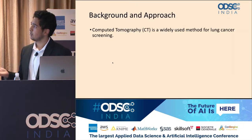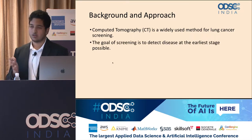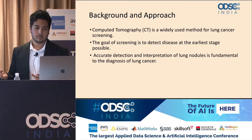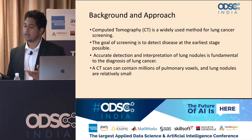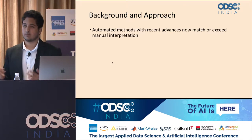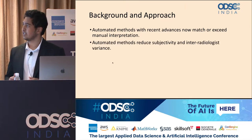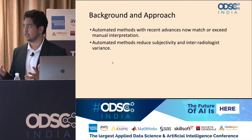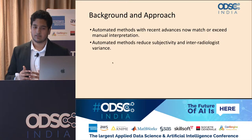Computed tomography, or CT, is widely used for lung cancer screening. An accurate detection is quite important to the diagnosis of lung cancer, but a CT scan can have millions of voxels and a lung nodule is quite small and hard to detect. Automated methods have recently shown better or comparable accuracies to manual interpretation by radiologists, and they can reduce subjectivity and inter-radiologist variance. Using automated methods can reduce subjectivity significantly and improve diagnosis.